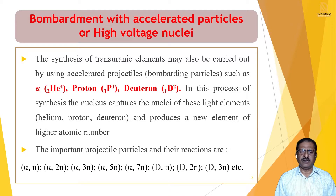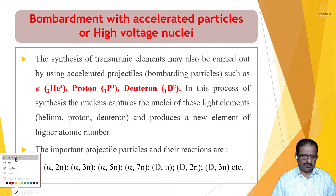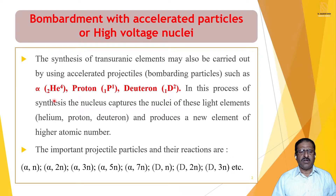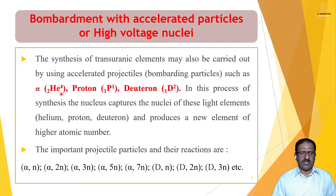Synthesis of transuranic elements can be carried out by these accelerated projectiles. These projectiles are previously accelerated particles — that is the alpha particle, proton, and neutron — which have higher atomic number and atomic weight than nitrogen. Alpha particles are equivalent to helium, with atomic number 2, charge 2, and mass 4.